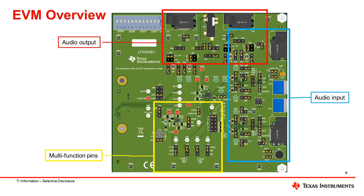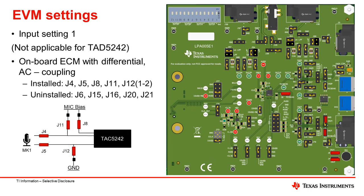After setting up the ACMB, the EVM will also need to be configured according to the user settings. The image shows an overview of different audio functions on the EVM. Let's explore the configurations that the EVM allows. This video will cover two common input settings: differential onboard microphone, and differential line input. Please refer to the user guide for other configurations.